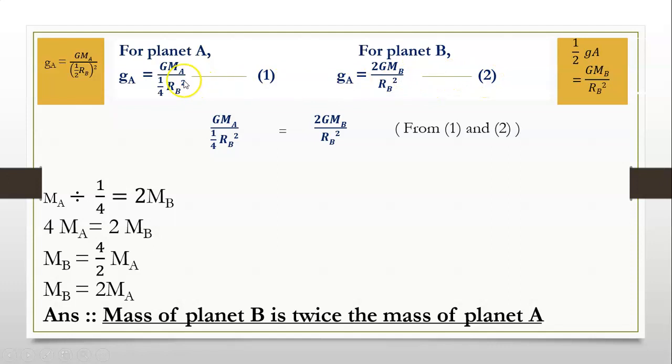So now we have 2 values for GA. So from 1 and 2, we equate the 2 values: G into MA upon 1 upon 4 square of RB is equal to 2 into G into MB upon square of RB. When we go further, we cancel all the common terms G and square of RB on the left hand and right hand side. And what is remaining is, we have on the left hand side MA divided by 1 upon 4. MA divided by 1 upon 4 is equal to on the right hand side, we have 2 into MB only. So 2 into MB.